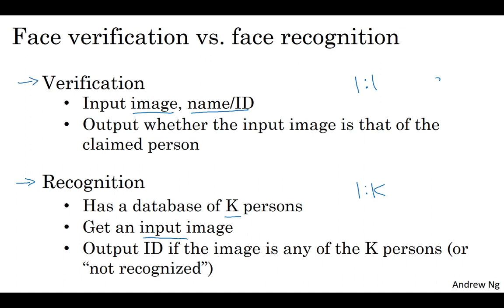The recognition problem is much harder than the verification problem. To see why, let's say you have a verification system that's 99% accurate — 99% might not be too bad. But now, suppose K is equal to 100 in a recognition system. If you apply this system to a recognition task with 100 people in your database, you now have 100 times the chance of making a mistake. If the chance of making a mistake on each person is just 1%, with a database of 100 persons, you might actually need a verification system with maybe 99.9% or even higher accuracy before you can run it on a database of 100 persons and still have a high chance of getting it correct.